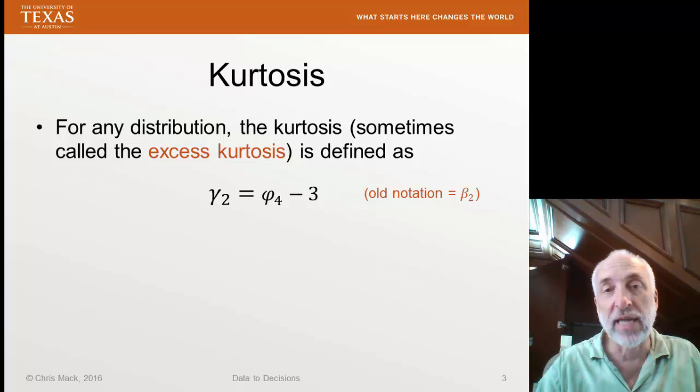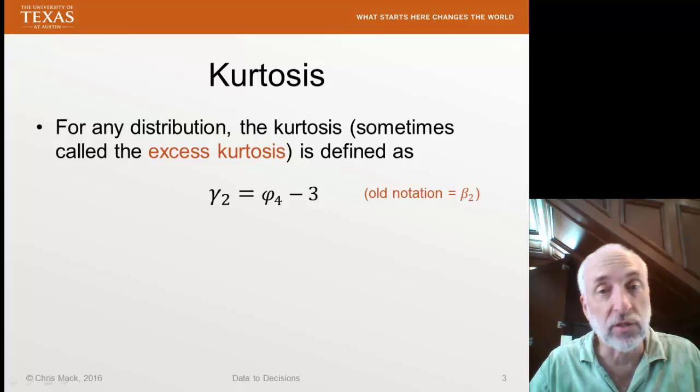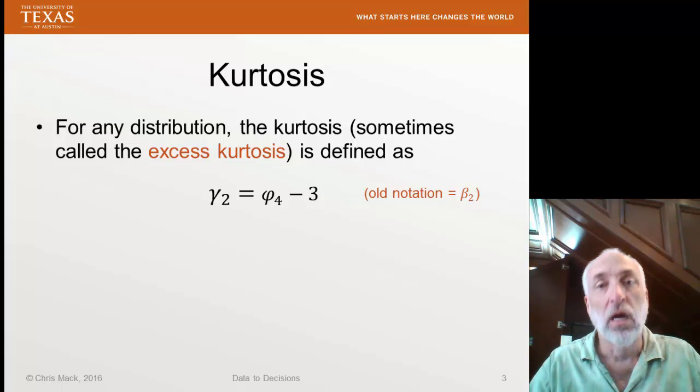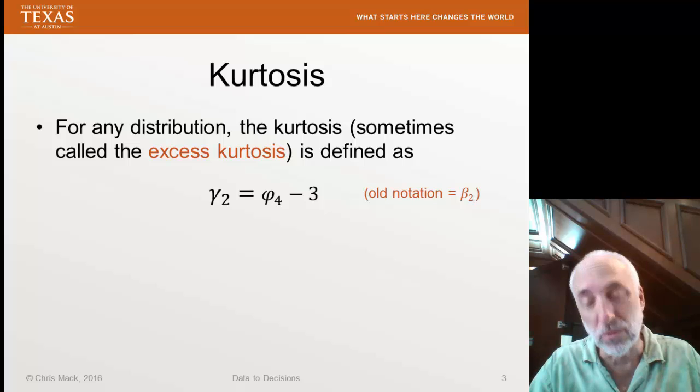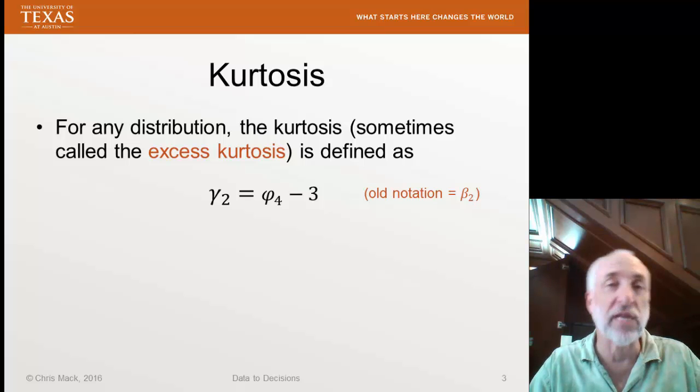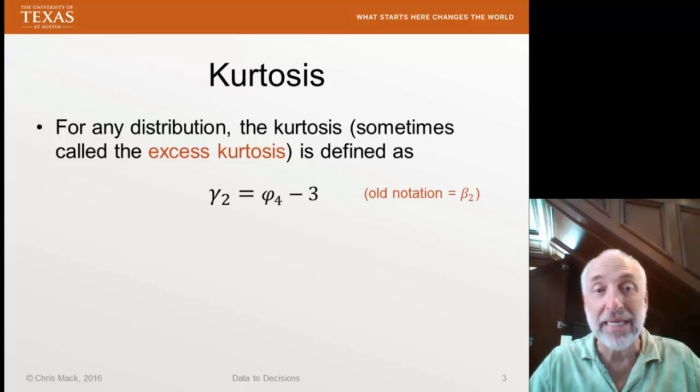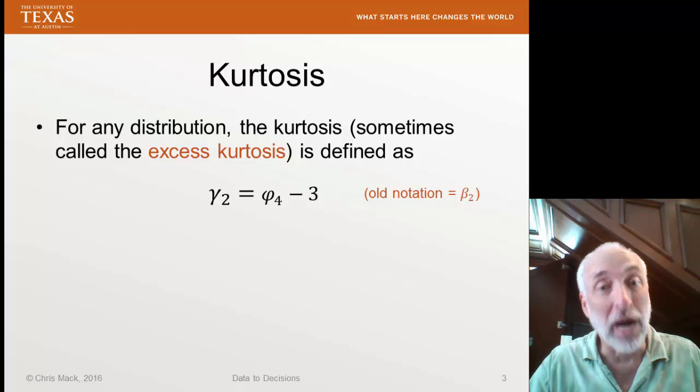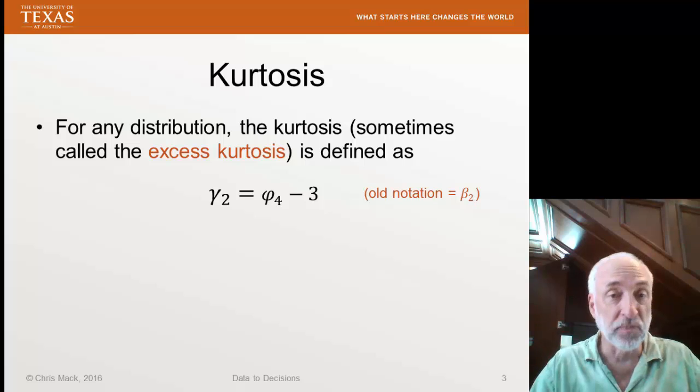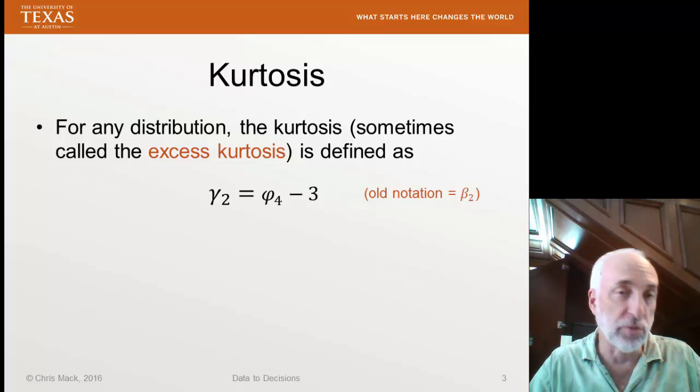In particular, take phi sub 4, the fourth standardized moment, subtract off 3, and we'll call that quantity gamma 2, the excess kurtosis. Why do we subtract off 3? Recall from last lecture that 3 was the value of phi sub 4, the fourth standardized moment, for the case of a normal distribution. So if I subtract off 3, and if gamma 2 is positive, that means we have more kurtosis than a normal distribution. And if gamma 2 is negative, we have less kurtosis than a normal distribution.